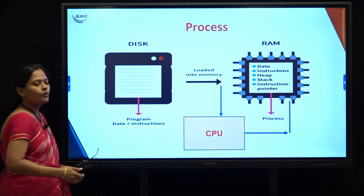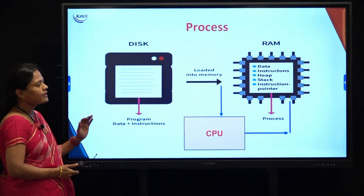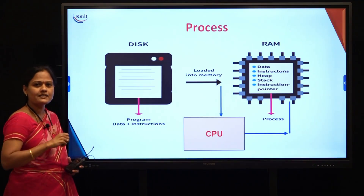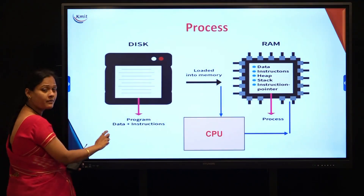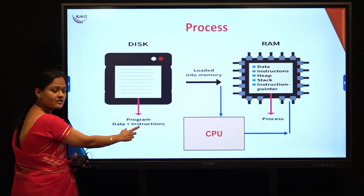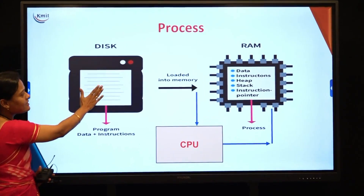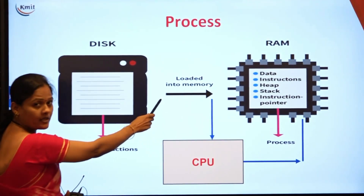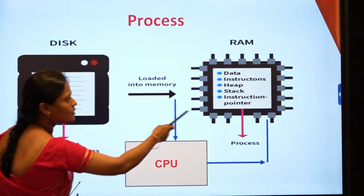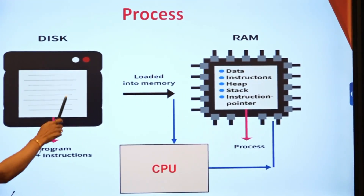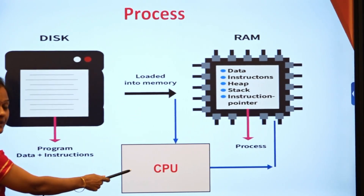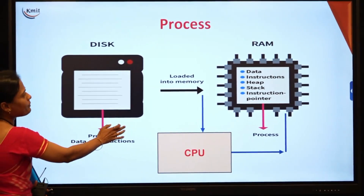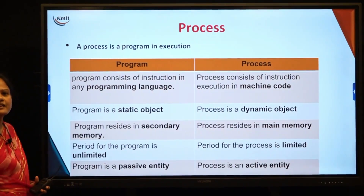Moving on to the first one — what is a process? Before moving on to see what is a process, let me first tell you what is a program. A program is nothing but the data and the instructions put together. This program will be present in your secondary memory. When it is loaded, it moves on to your RAM — your primary memory. When a program is present on the primary memory and it is being executed by the CPU, that we call a process. So a process is nothing but a program which is under execution.